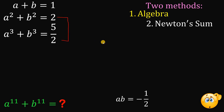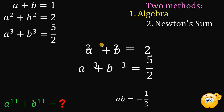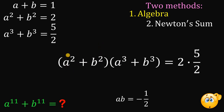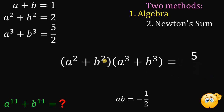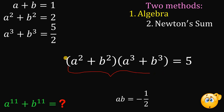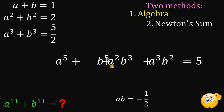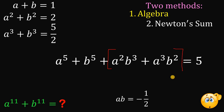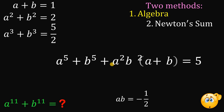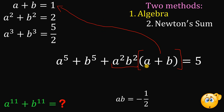Next, let's multiply the second and third equations together. Multiplying a squared plus b squared by a cubed plus b cubed gives 2 times 5 over 2 which equals 5. On the left side, expanding gives a raised to the 5th power plus b raised to the 5th power, plus a squared b cubed plus a cubed b squared. We factor out a squared b squared from the last two terms to get a squared b squared times a plus b, and since a plus b equals 1, that simplifies to just a squared b squared. Since a squared b squared equals ab raised to the power of 2, and ab equals negative 1 half, we get negative 1 half squared equals 1 over 4. Subtracting 1 fourth from both sides, we get a raised to the 5th power plus b raised to the 5th power equals 5 minus 1 fourth, which is 19 over 4.